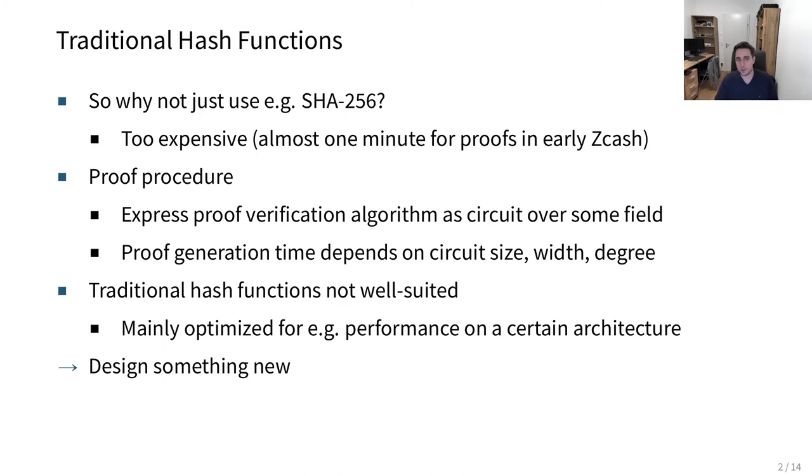A question might be, why don't we just use a traditional hash function, for example SHA-256? The reason is that it's too expensive. In early implementations of Zcash using SHA-256, it almost took one minute for proofs. The reason is that the proof procedure is essentially very similar for all of the systems.